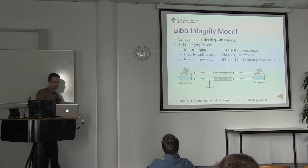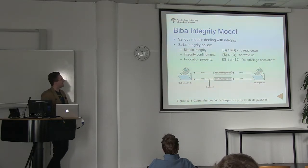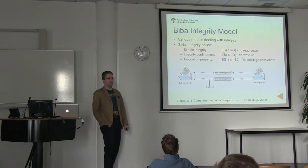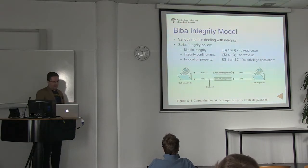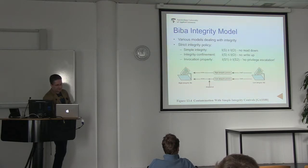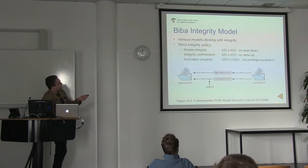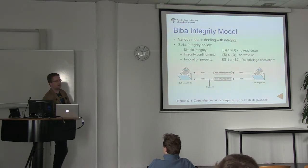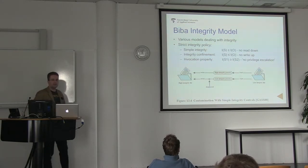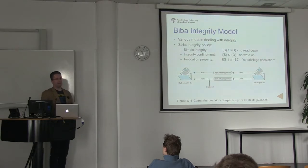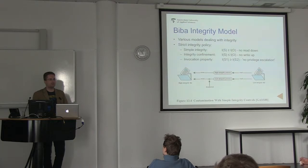So, you have the BIBA integrity model. I made some changes to the original sheets to make it clearer. They still have similarly named ideas of no read down and no write up. Simple integrity means a subject at a given level of integrity is not supposed to read objects of the same or lower integrity level — still the idea of no read down. Conversely, integrity confinement — no write up, the star property of BIBA but in reverse — means a subject at a given level should not write into objects of a higher integrity level.